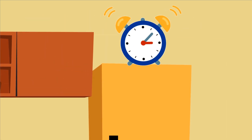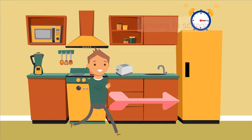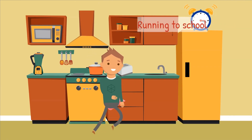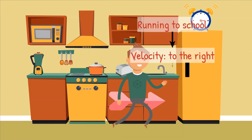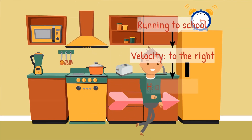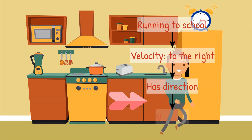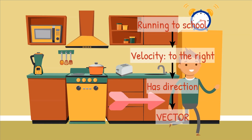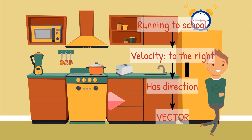The clock rings. It is school time. Mike is running to the right towards the front door. The velocity of Mike has a direction. Therefore, the velocity is a vector quantity.